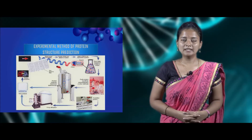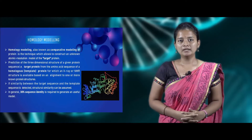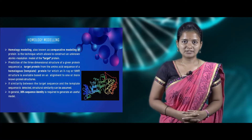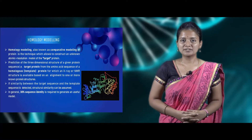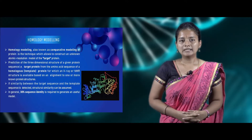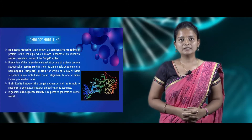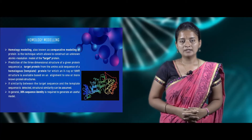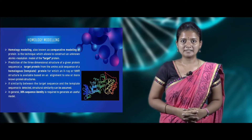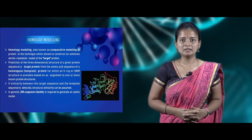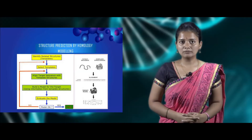Now we'll be discussing about the computational method: homology modeling. Homology modeling is one of the computational methods to predict protein structure; it's also known as comparative modeling of protein structure prediction. Here we construct the unknown protein structure by using a template protein structure obtained from a protein database. We compare our target protein with the template protein by sequence similarity, and if the sequence similarity is equal to or greater than 30%, then we can perform homology modeling.